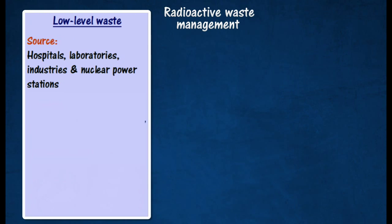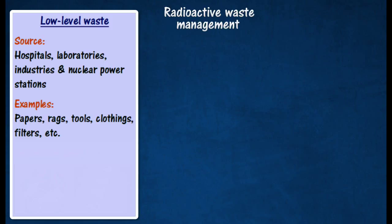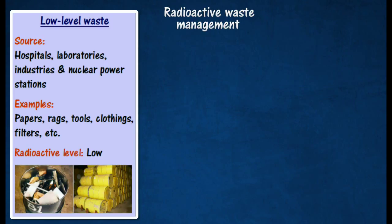Low-level waste is generated from laboratories, industries, and nuclear power stations. It comprises papers, rags, tools, clothing, filters, and other objects which contain small amounts of mostly short-lived radioactivity. Such waste is not dangerous to handle but must be disposed of more carefully than normal garbage. It is usually buried in shallow landfill sites. To reduce its volume, it is often compacted or incinerated in a closed container before disposal.